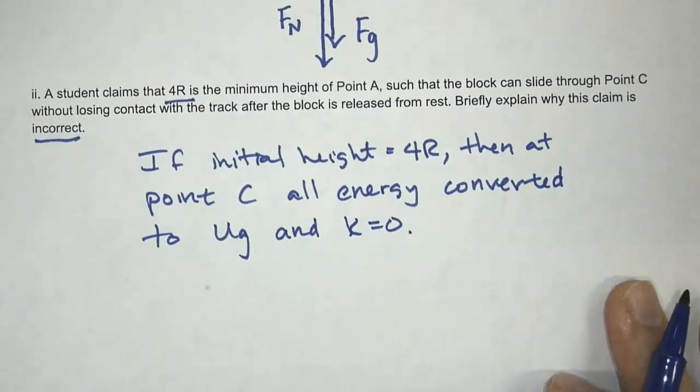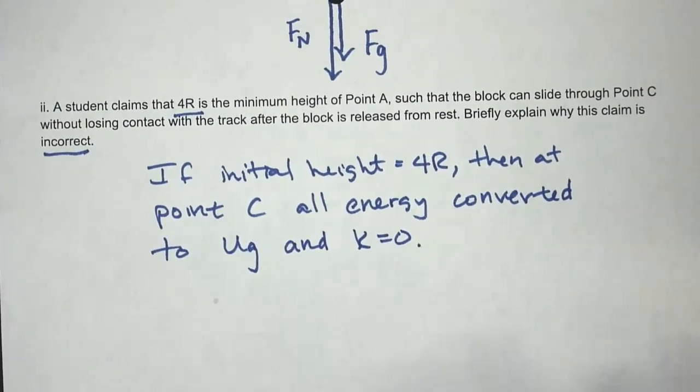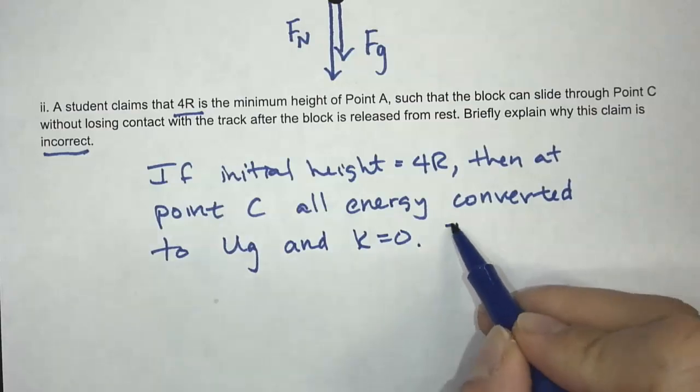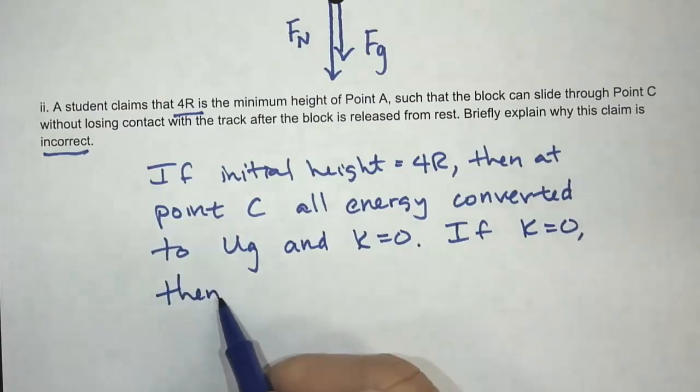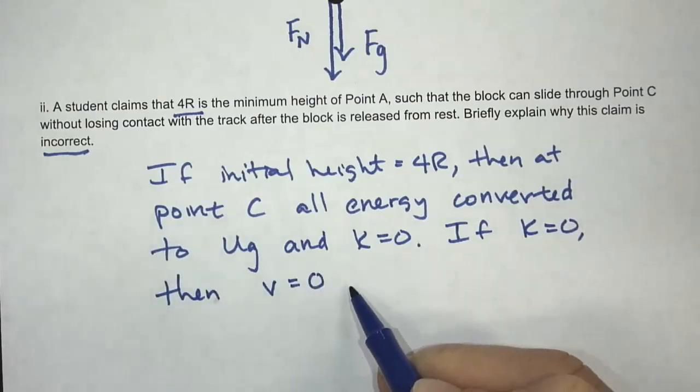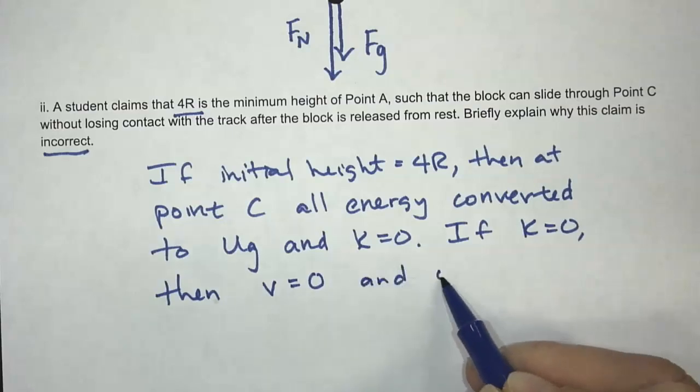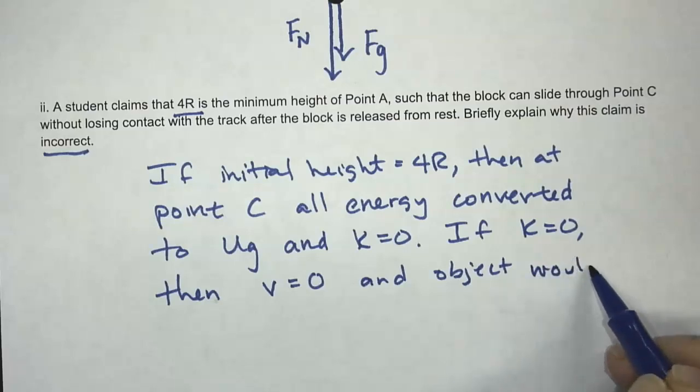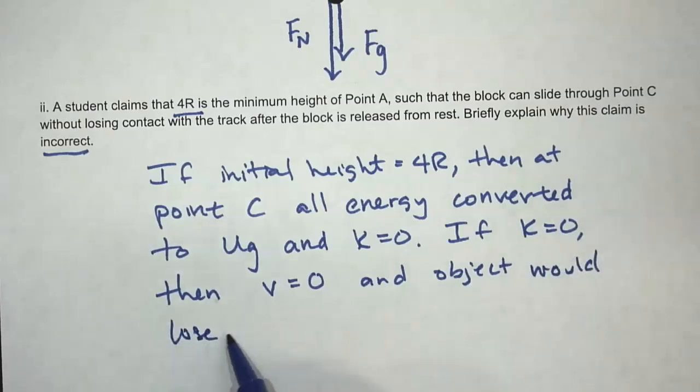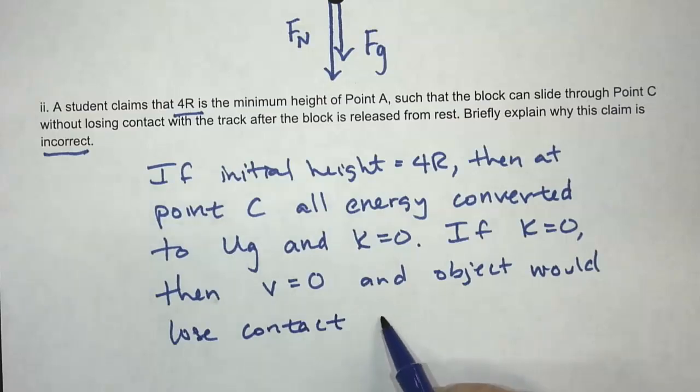So that means when it gets to point C, the kinetic energy is zero. And what that means is, if kinetic energy equals zero, then the velocity equals zero, and the object would lose contact with the track.